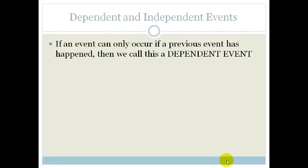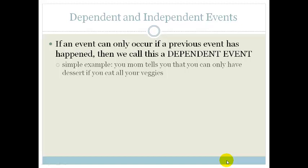If an event can occur only if a previous event has happened, then we call this a dependent event. For example, if your mom tells you you can only have your dessert if you eat all your veggies, then that's a dependent event — you only get dessert if you have all your veggies. That's dependent.